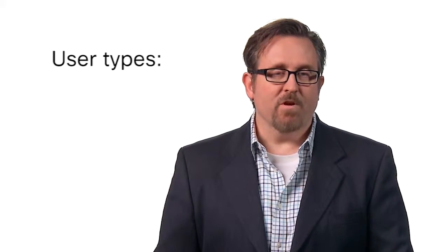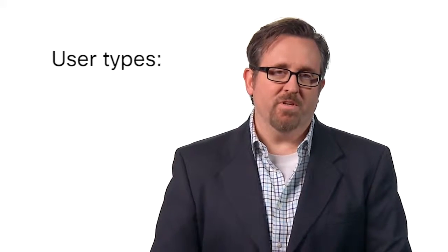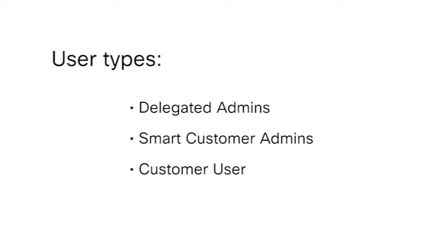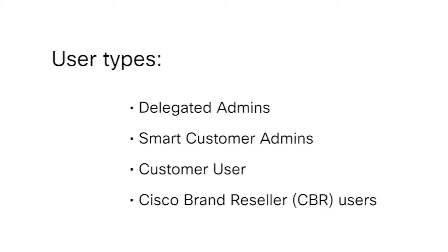Now, there are some very valuable capabilities you can only get through the SmartNet TotalCare Portal. But first, you need to set up users and their roles, and there are four types you need to consider: delegated admins, smart customer admins, customer user, and Cisco brand resellers, or CBR users.